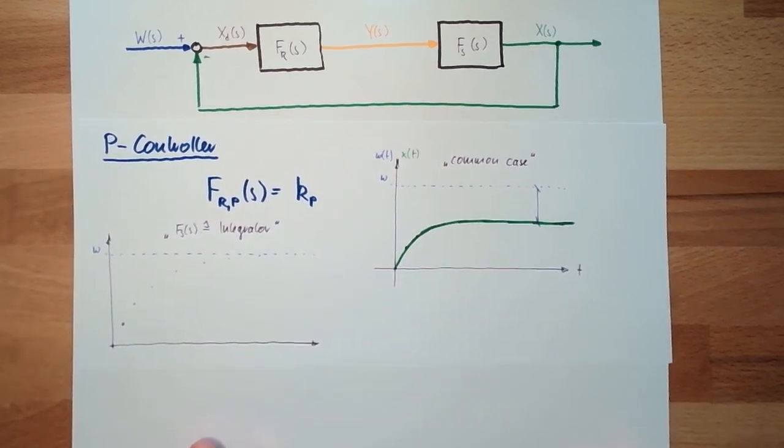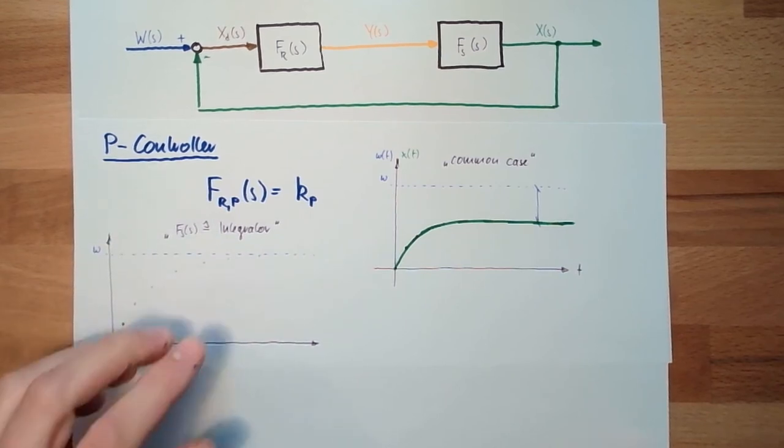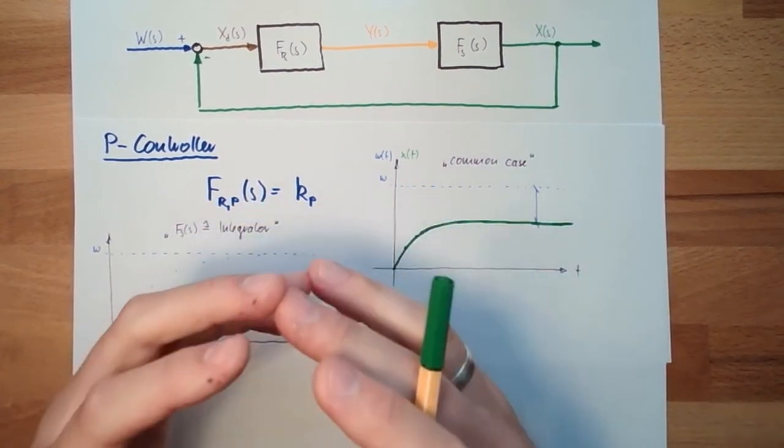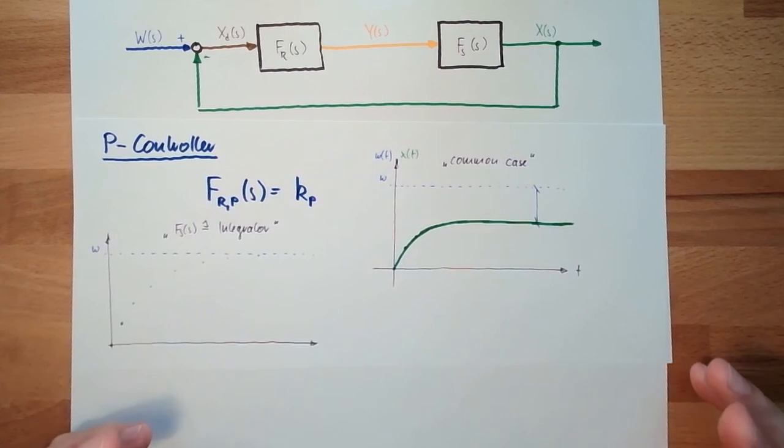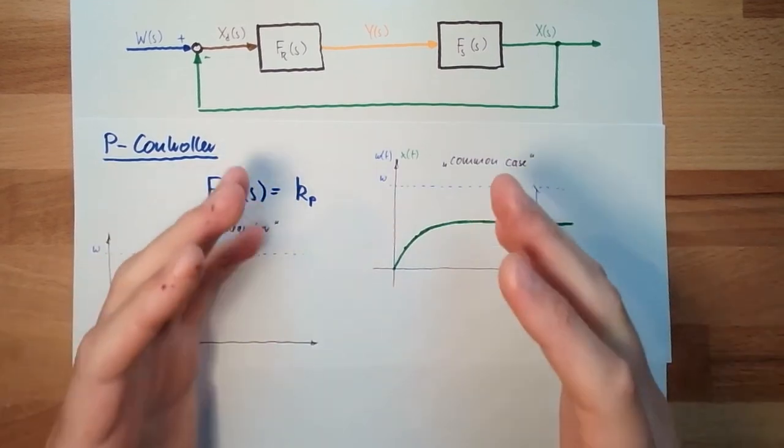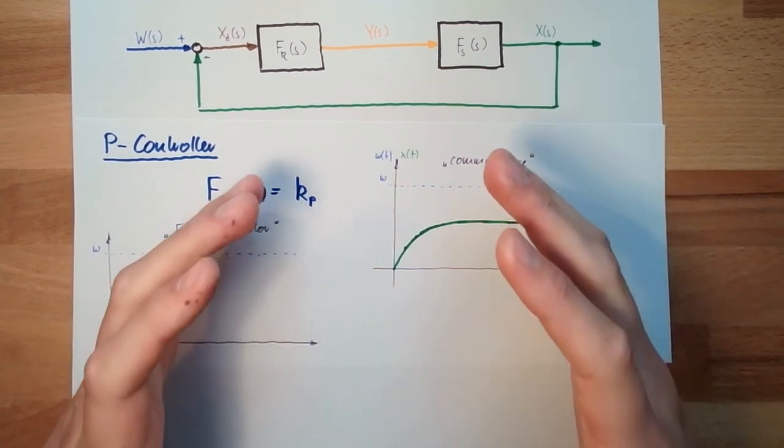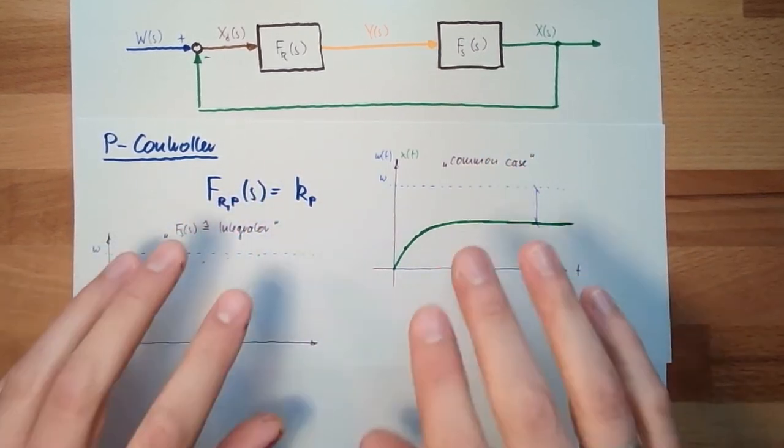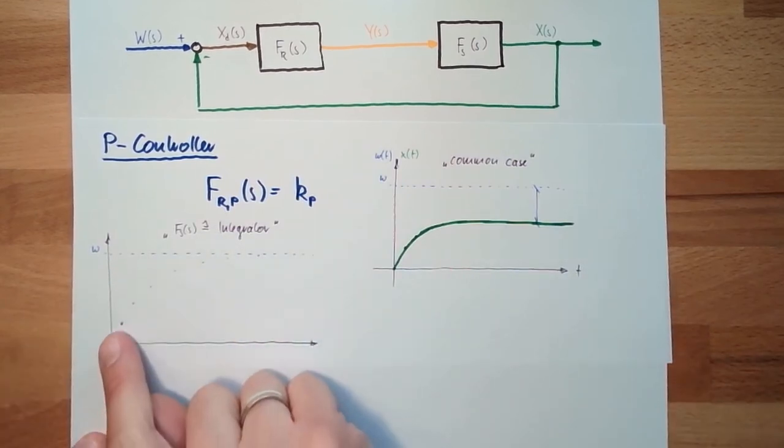Because in worst case, the controller, in this case, in our example, is stopping to fill in water. But up to then, it always fills water. And the water will not get away from the bucket because it's accumulated there. It's integrated. All the water which was rushing inside is inside the bucket and will not leave.